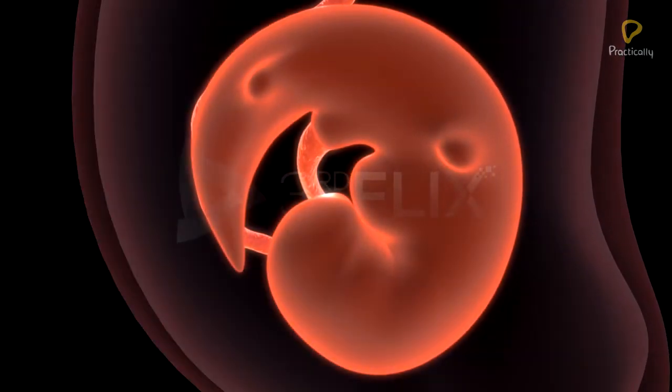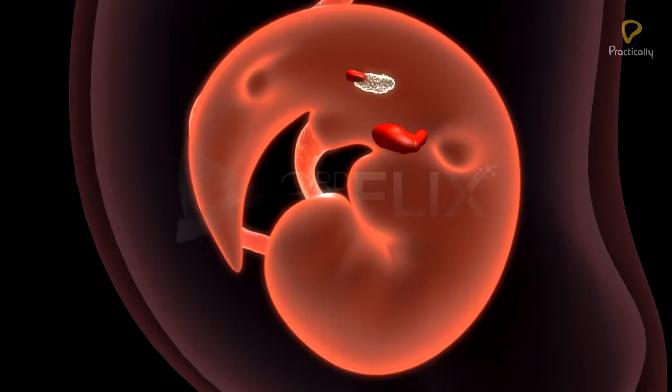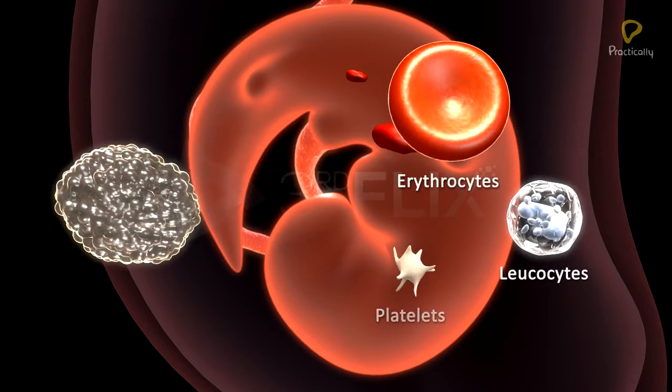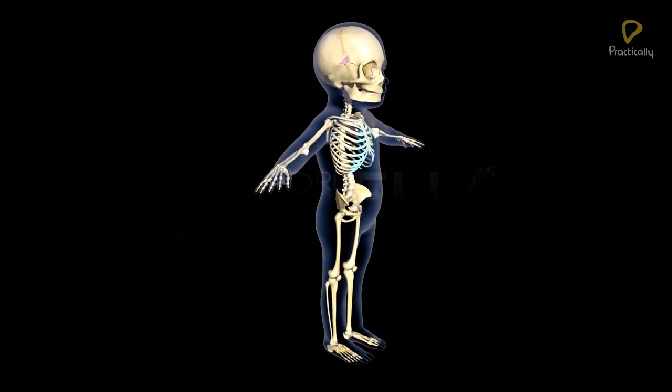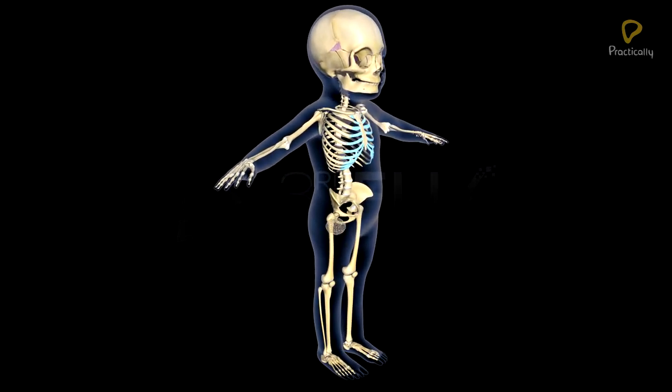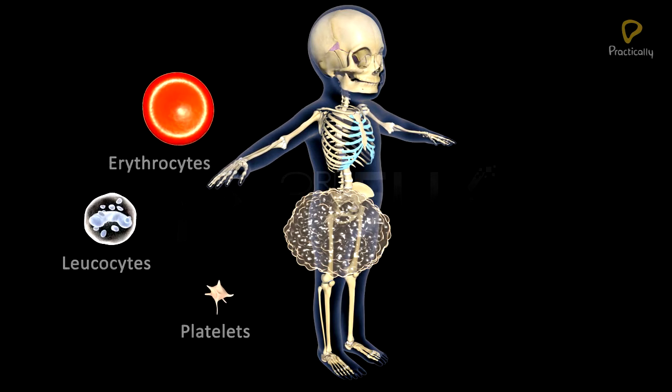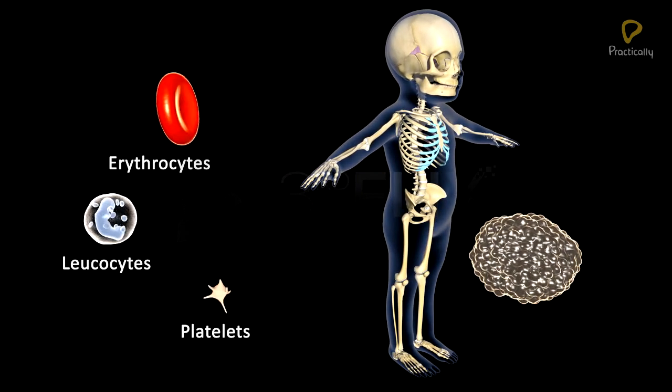Later on, the liver and spleen act as the hemopoietic tissues. In the final stages of embryonic development and after birth, the red bone marrow is the primary site of hemopoiesis.